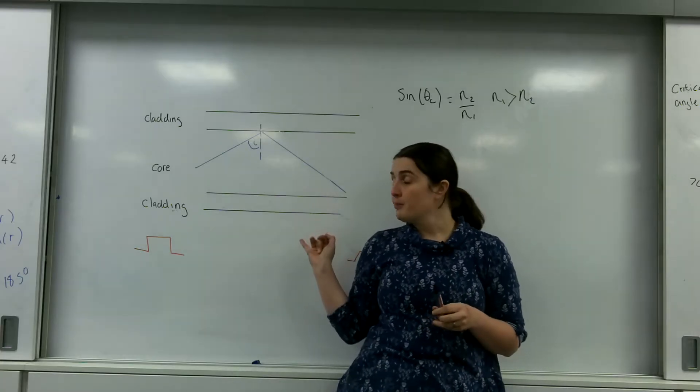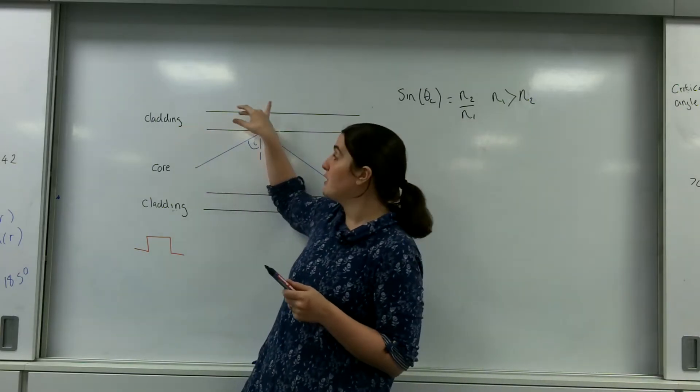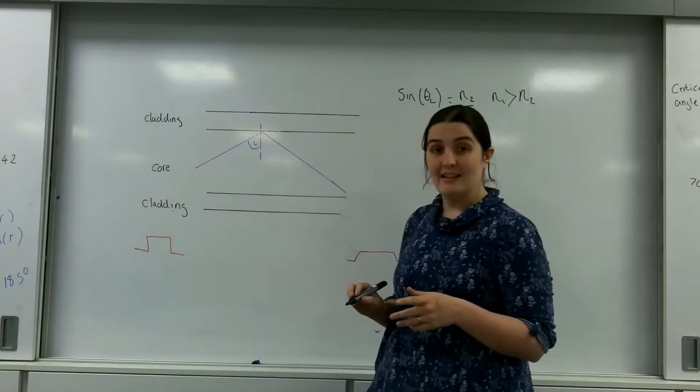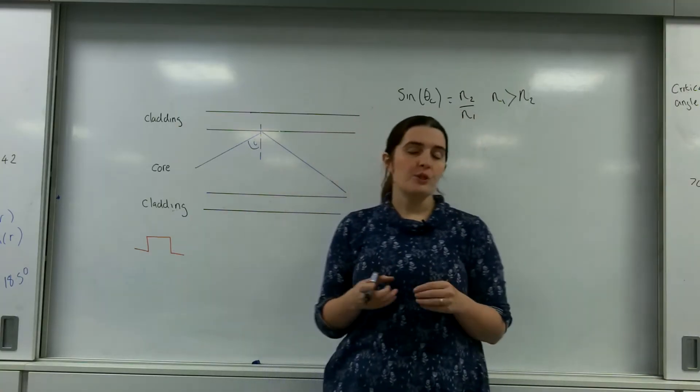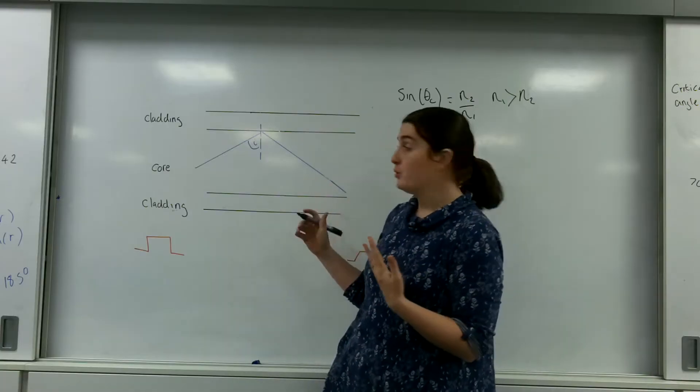So this is a fiber optic cable and you have the core and this is where the signal goes, and you have something called the cladding. The job of the cladding, of course, is to protect, this primary objective is to protect the actual core.